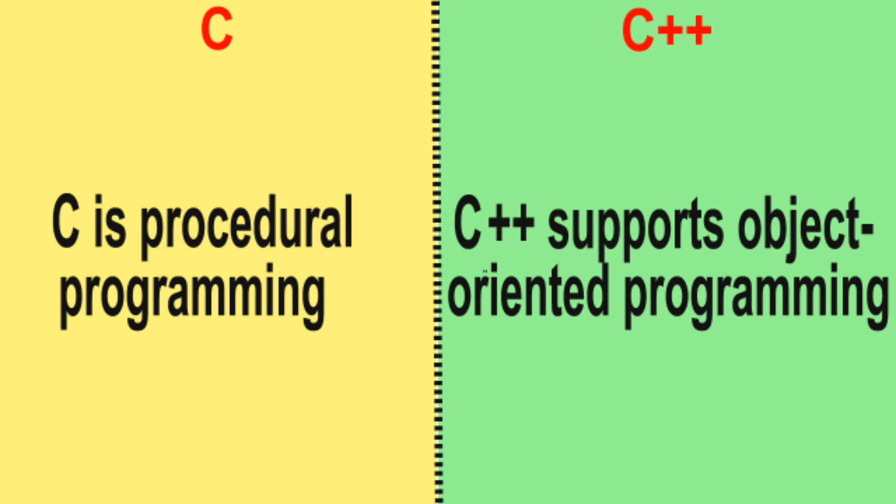Difference number 2: C is procedural programming. C++ supports object-oriented programming.